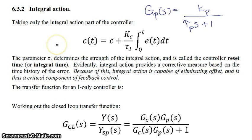So evidently, integral action provides a corrective measure based on the time history of the error. Because of this, integral action is capable of eliminating offset, which is very important, and is thus a critical component of feedback control.